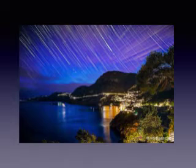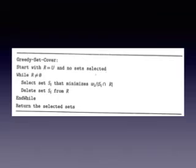So, of course, once some sets have already been selected, we are only concerned with how we are doing on the elements still left uncovered. So, we will maintain the set R of remaining uncovered elements and choose the set Si that minimizes wi divided by |Si ∩ R|.